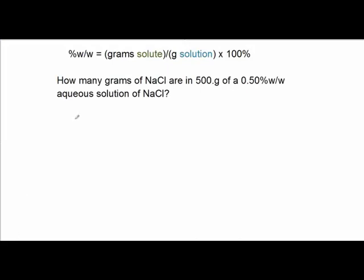Here's a slightly different problem: how many grams of sodium chloride are in 500 grams of a 0.5% weight-per-weight aqueous solution of sodium chloride? In this kind of problem, we're not asked to determine the weight-weight percent — we're given it. What we're asked to find is the grams of sodium chloride, which is the grams of solute. Our unknown is not the percent, but one of the items in the fraction. This essentially becomes an algebra problem.